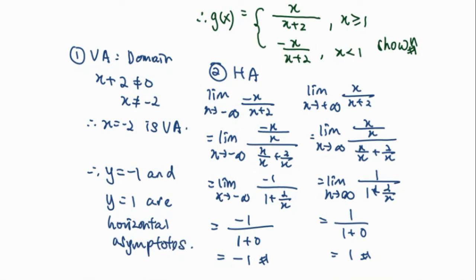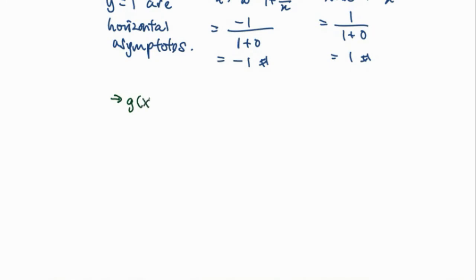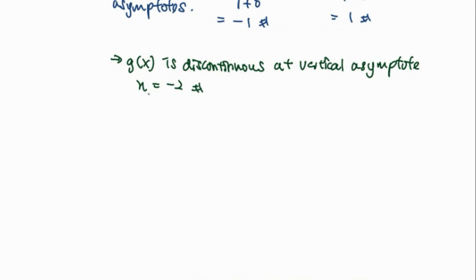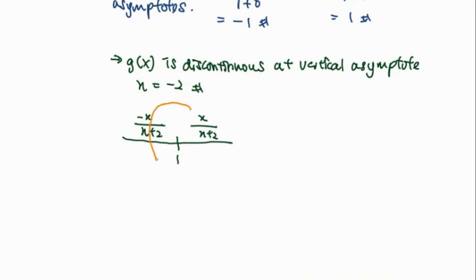After finding the asymptotes, we are going to determine the point of discontinuity. First, g(x) is discontinuous at the vertical asymptote, which is x equals negative 2. Notice that for our g(x), when x is less than 1 it is negative x over (x plus 2), and when x is greater than 1 it is x over (x plus 2). There is a change of function at x equals 1, so now we want to test the continuity at x equals 1.